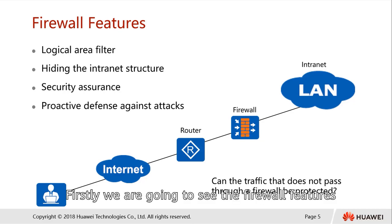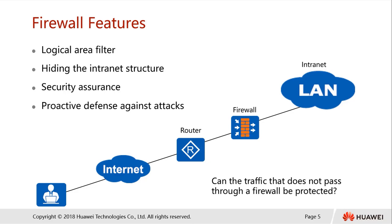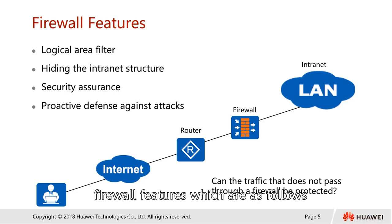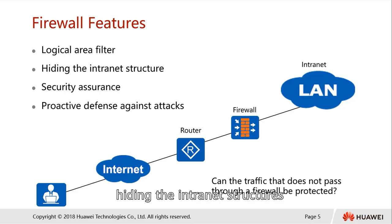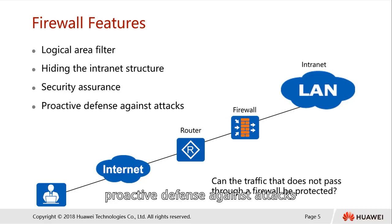Firstly, we are going to see the firewall features. We have several firewall features as follows: logical area filter, hiding the intranet structures, security assurance, and proactive defense against attack. All these features are basically what a basic firewall should have.